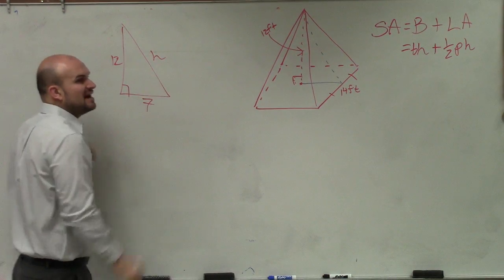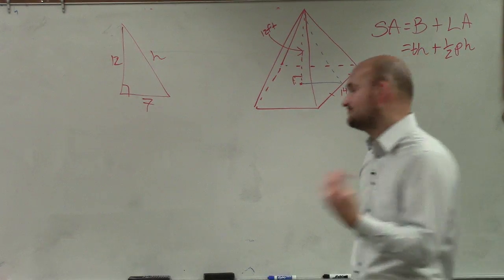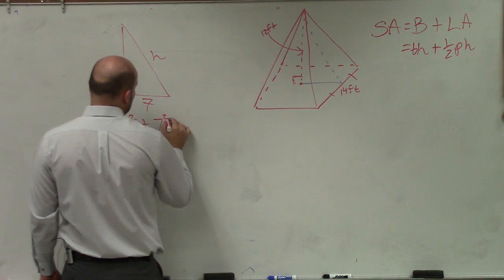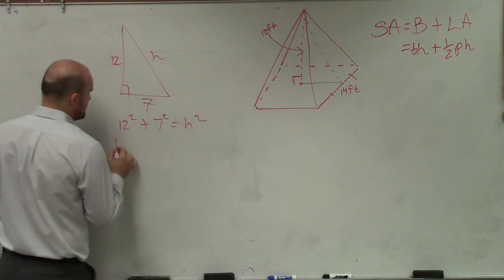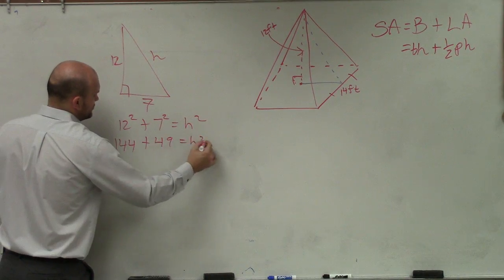So is it possible for me to find my h, which is the slant height? I have to use Pythagorean theorem. So I have 12 squared plus 7 squared equals h squared. 12 squared is 144 plus 7 squared is 49 equals h squared.